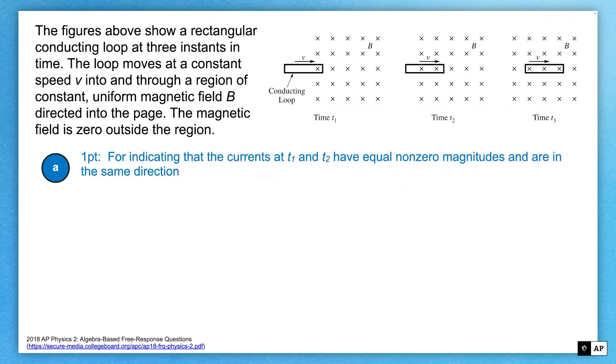So let's look at the points. The first point is for indicating the currents at T1 and T2 have equal non-zero magnitudes and are in the same direction. We know that because what induces the current is an induced EMF. And that's a result of a changing flux, a changing magnetic flux, the number of x's in the loop. And that the EMF is proportional to the rate of change of flux. And at T1 and T2, since the loop is moving at a constant speed and the magnetic field is constant, the rate of change of flux is constant. So the EMF is constant. So the current is constant. So at T1 and T2, equal non-zero magnitudes, same direction. Because the flux is increasing, so the current is going to be in the same direction in both of those spots. No current at time three because it's all the way inside. The flux isn't changing. No change in flux. No EMF. No current.